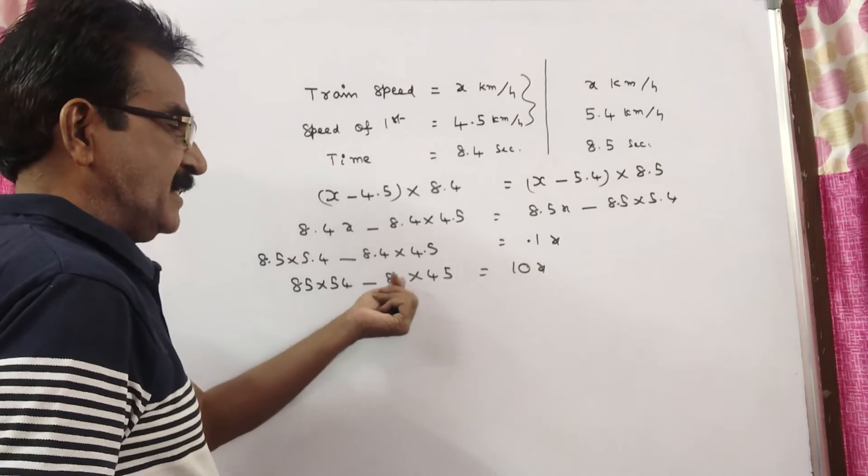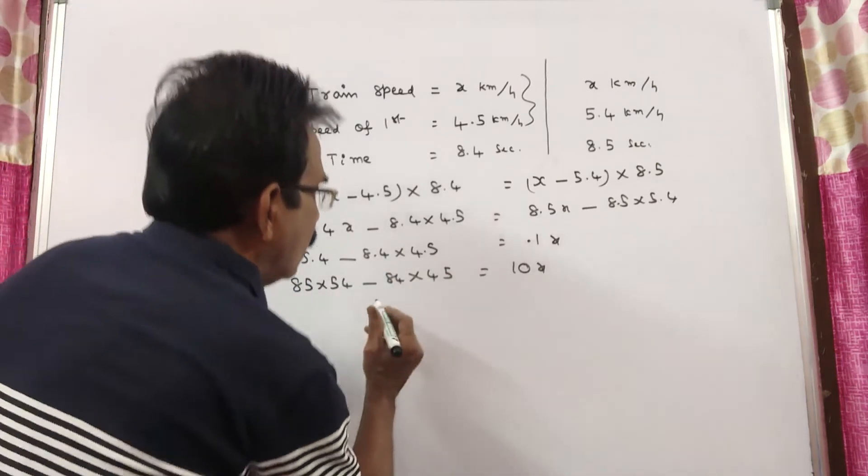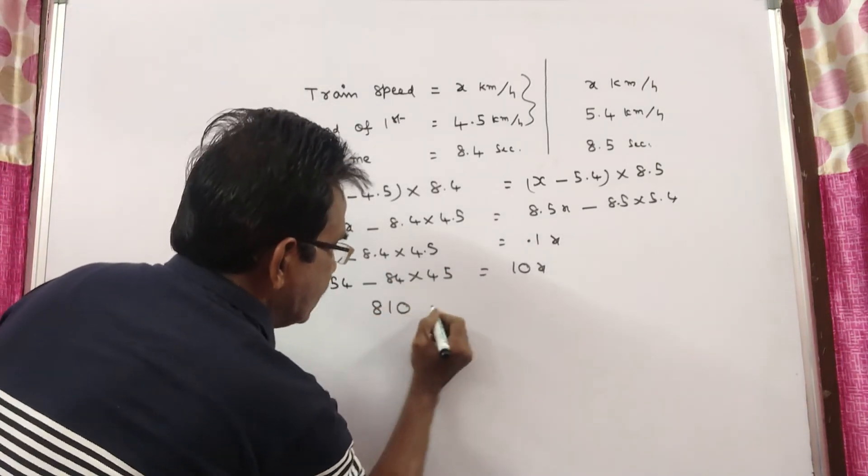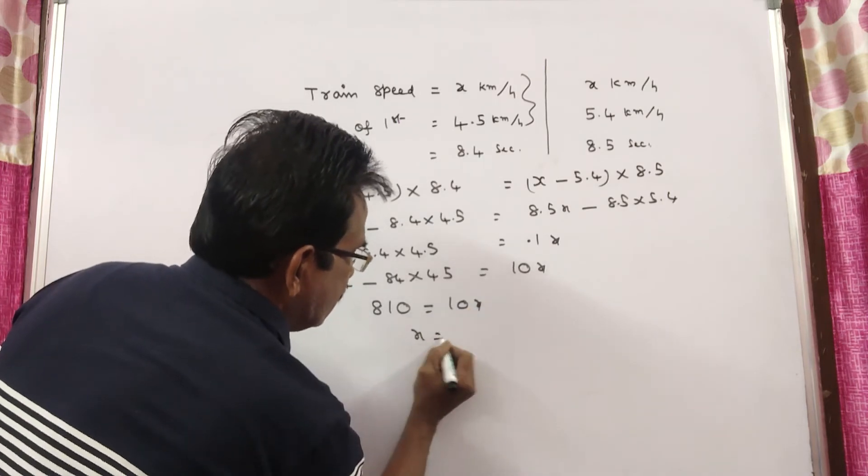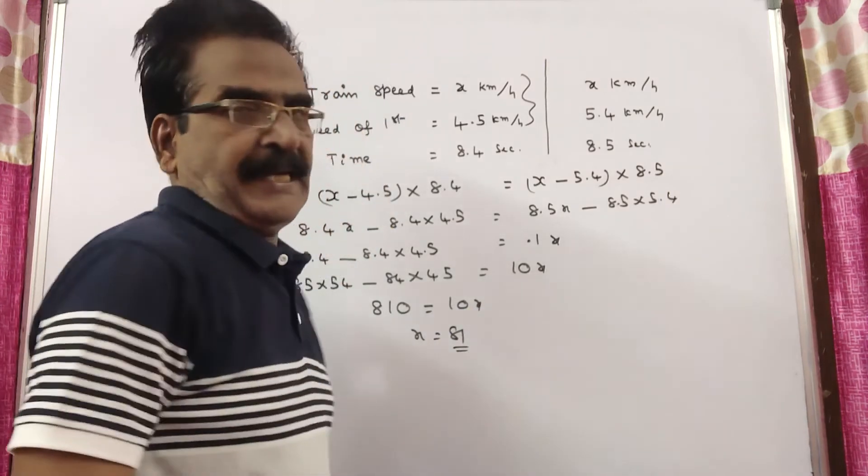So, 85 into 54 minus 84 into 45 comes to 810, friends. 810 is equal to 10x. x is equal to 81 kmph, friends.